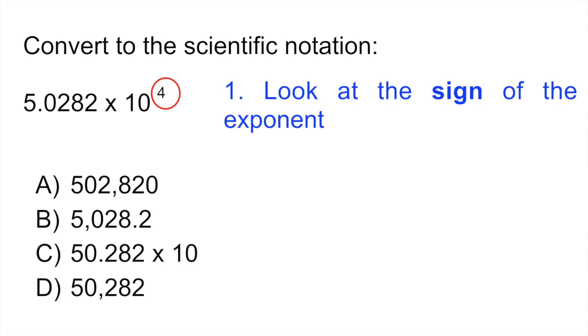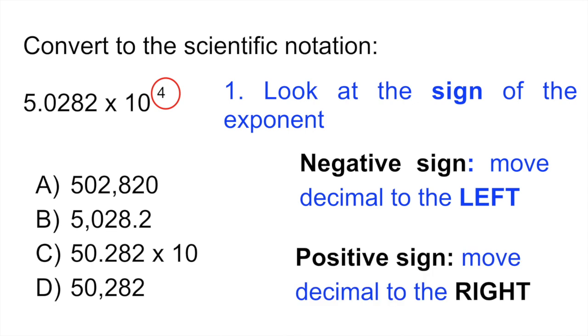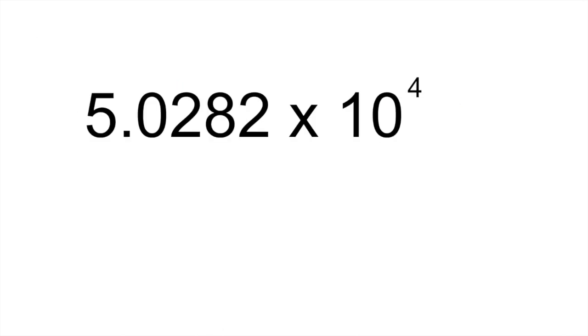So step one is to look at that exponent, and specifically what you're looking at is the sign of the exponent. Why? Well, because this is going to tell you to which side you're going to move your decimal point. So if the sign were negative, that means you would have to move your decimal point to the left. In this case, it is positive, so we are moving the decimal point to the right.